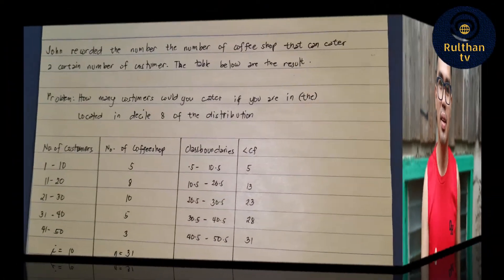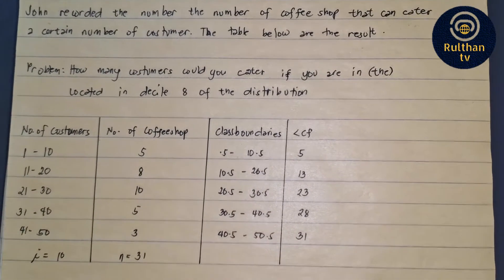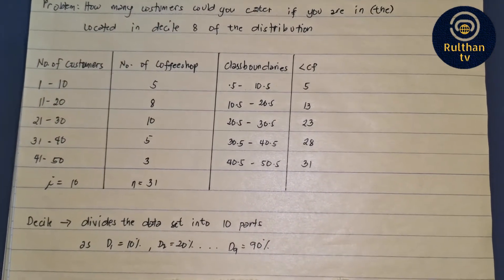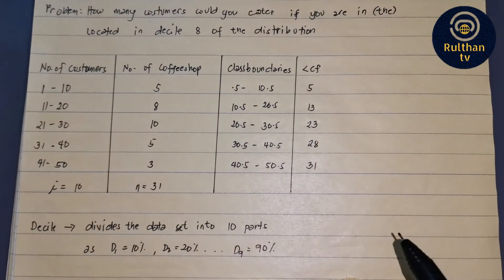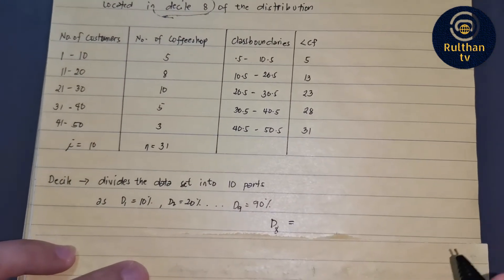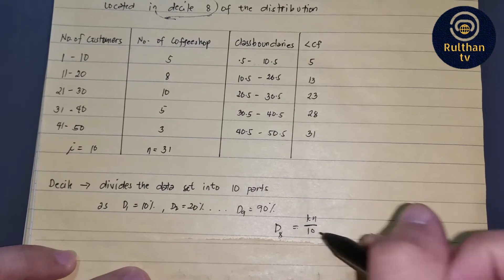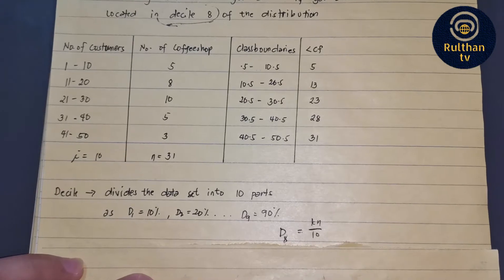Since we are done with step 1, we are ready now to begin step 2. Step 2 is we have to locate where decile 8 is located in our given data set. To locate the position, we use the formula KN divided by 10. Why divided by 10? Because we are dealing with decile, which divides the data set into 10 parts.